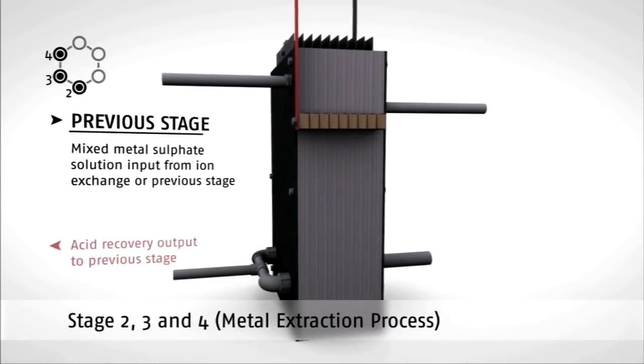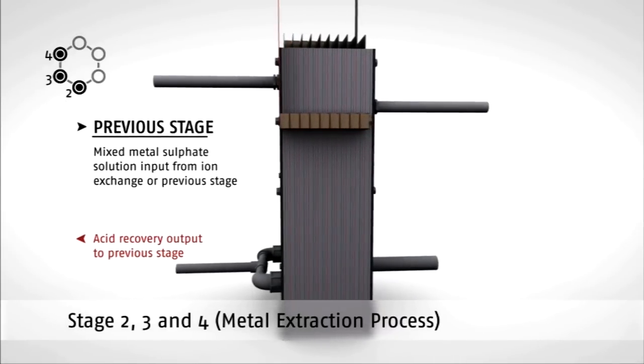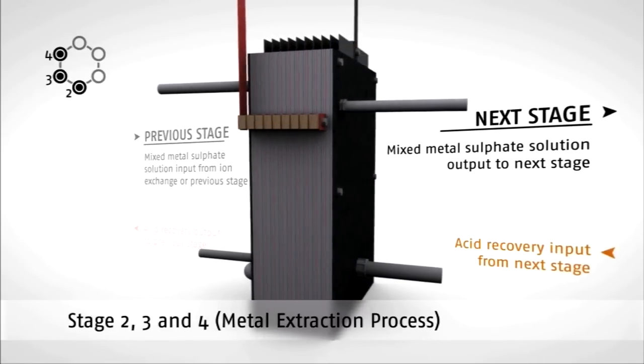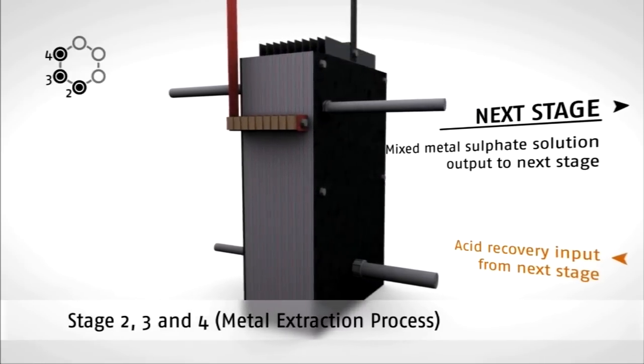To recap, the PLS from previous stages continues its cycle past the cathodes in one direction, while the acid being recovered continues its cycle past anodes in the opposite direction.